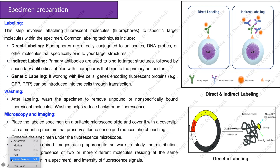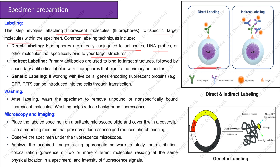Labeling involves attaching fluorescent molecules or fluorophores to specific target molecules within the specimen. Common labeling techniques include: direct labeling, where fluorophores are directly conjugated to antibodies, DNA probes, or other molecules that specifically bind to your target structures; and indirect labeling, where primary antibodies bind to the target structures, followed by secondary antibodies labeled with fluorophores. As shown in the diagram, the primary antibody is green and the secondary antibody labeled with the fluorescent molecule is blue.